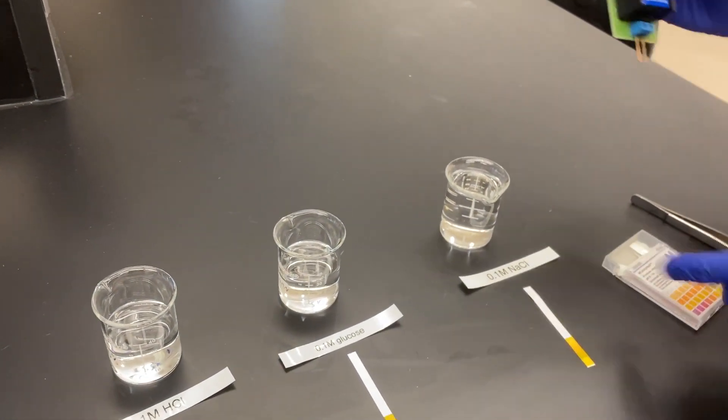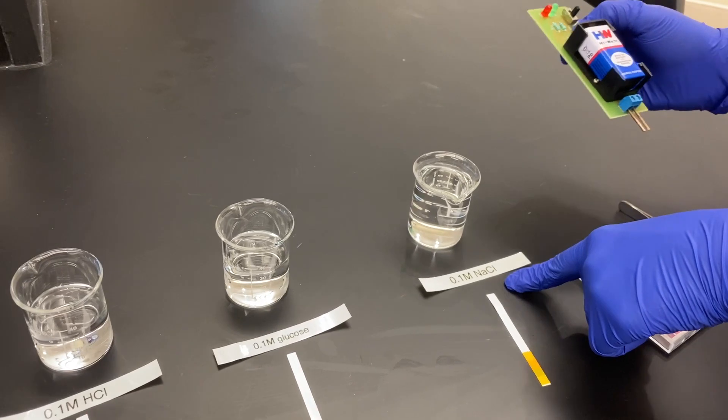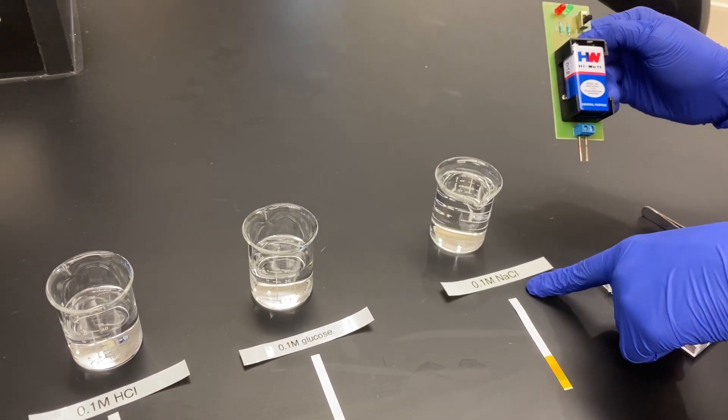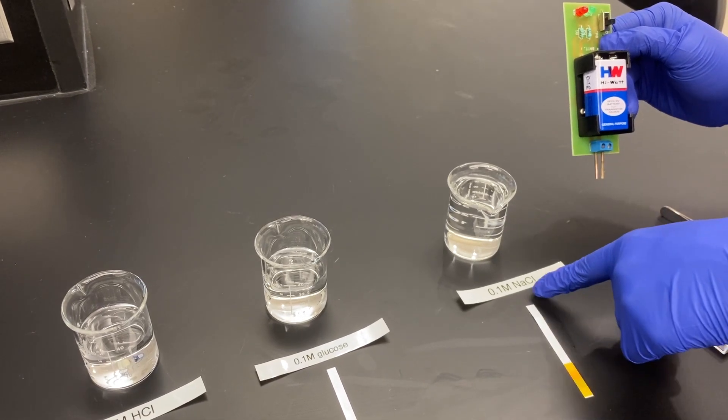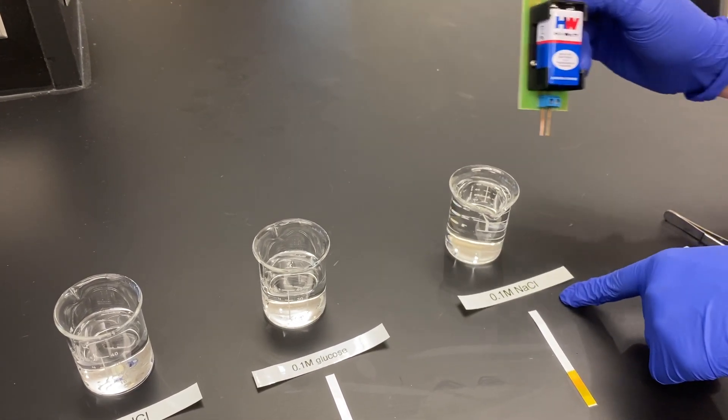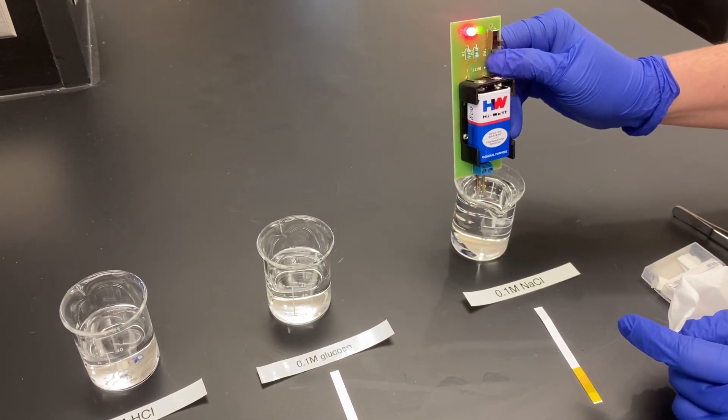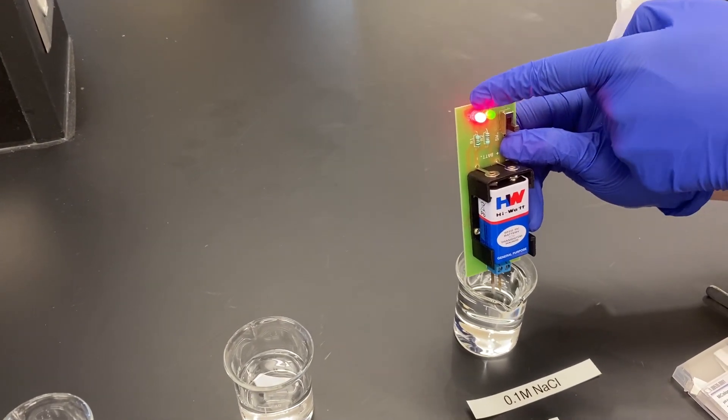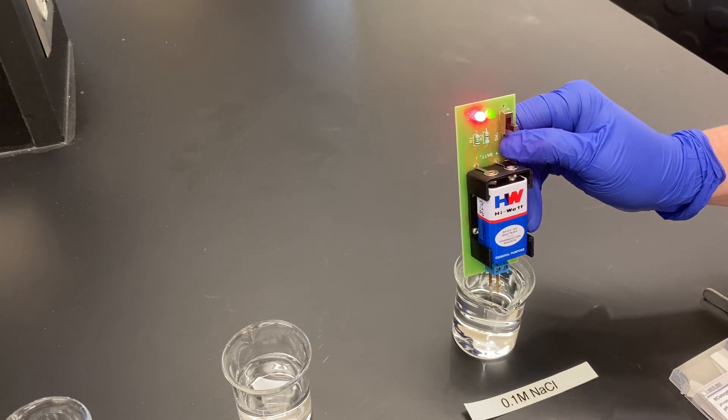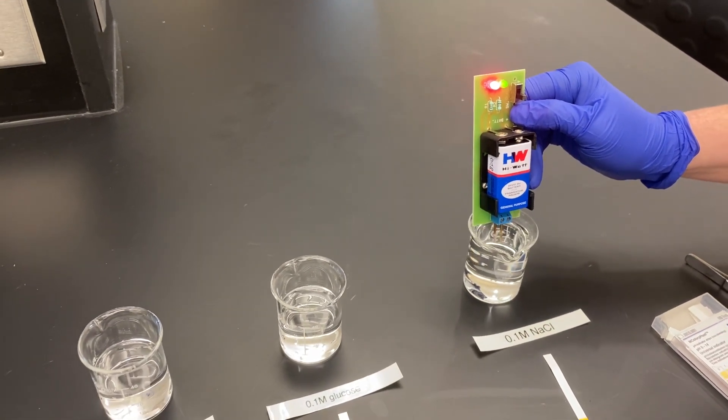The last one we're going to test is sodium chloride. As we saw earlier in the semester, sodium chloride dissolves in water and separates into its individual sodium and chlorine ions, so we should expect high conductivity. This shows very bright colors for both lights - high conductivity levels.